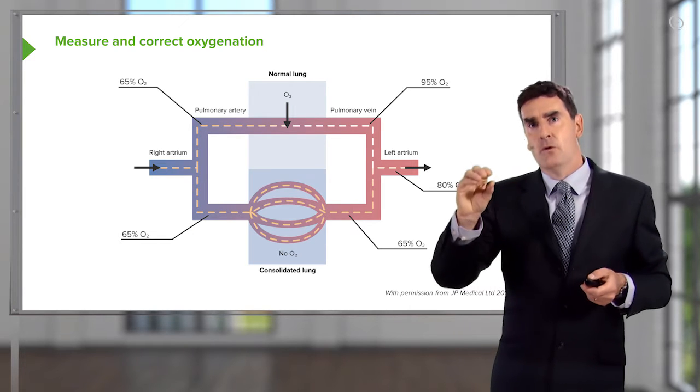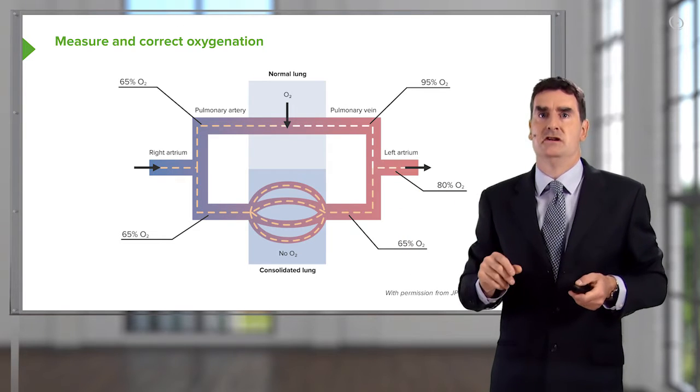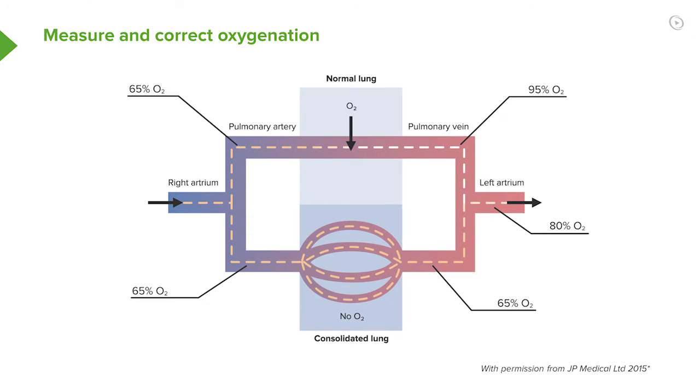Therefore it will reach the pulmonary veins in a deoxygenated state. You end up mixing the deoxygenated blood coming from the consolidated lung with the oxygenated blood coming from the remaining normal lung. The consequence of that is you add a mixture of hypoxic blood and normoxic blood, and the combination of the two will dictate how hypoxic the patient will be.